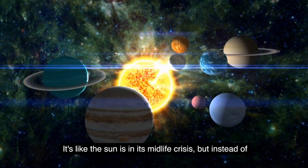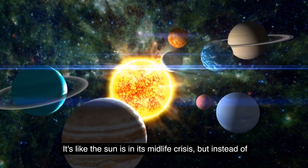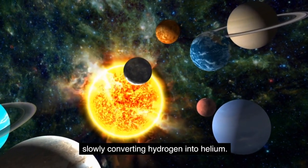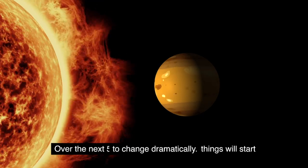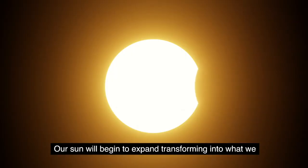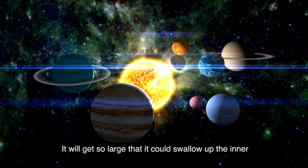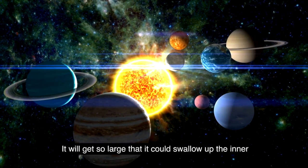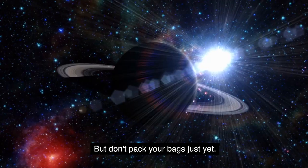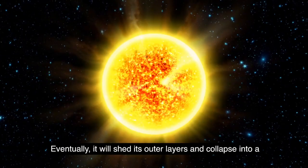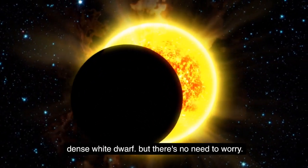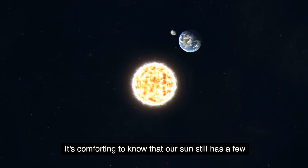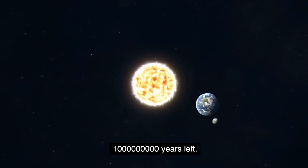But instead of buying a sports car, it's slowly converting hydrogen into helium. Over the next 5 billion years or so, things will start to change dramatically. Our sun will begin to expand, transforming into what we call a red giant. It will get so large that it could swallow up the inner planets, including Earth. But don't pack your bags just yet. Eventually it will shed its outer layers and collapse into a dense white dwarf. But there's no need to worry. It's comforting to know that our sun still has a few billion years left.